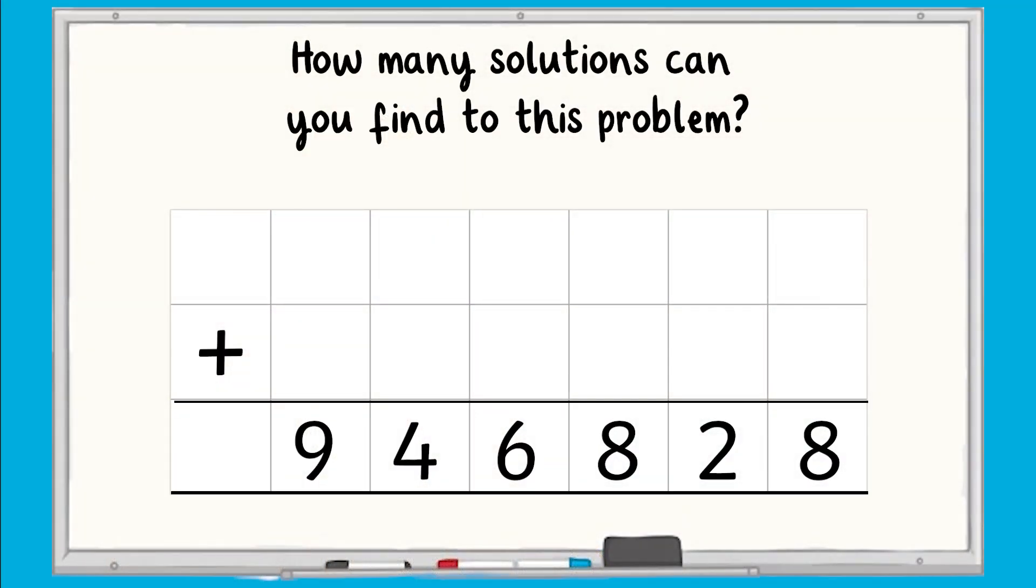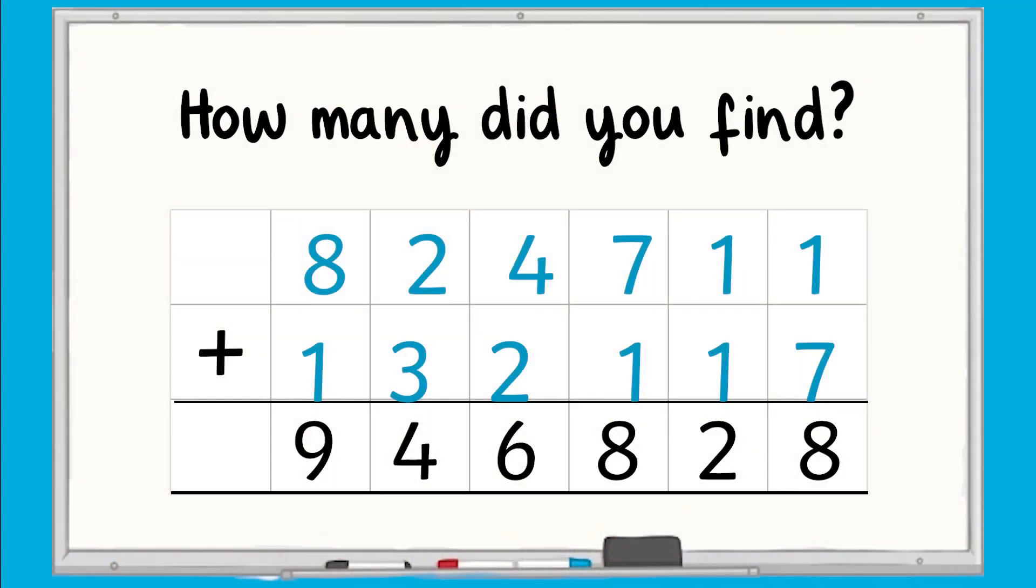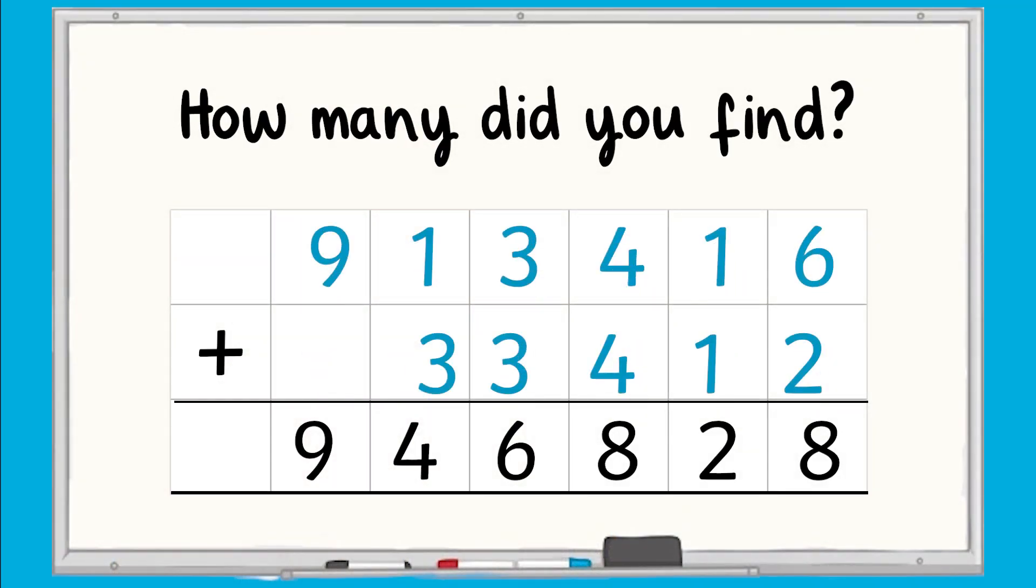Now it's time for a final challenge. How many solutions can you find to this problem? Try to find at least three different numbers which could total 946,828. How many did you find? There are lots of solutions to this problem, but the key is to make sure that the total of each column is correct.